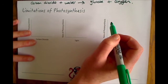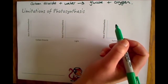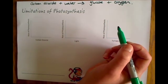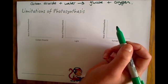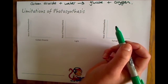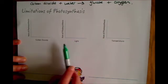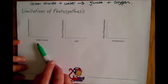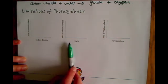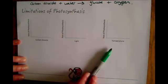When we're talking about limitations of photosynthesis we're thinking about things that can affect the rate of photosynthesis, so how quickly a plant can photosynthesize and essentially how quickly it can produce glucose. The three factors that we're going to talk about are carbon dioxide, light and temperature.